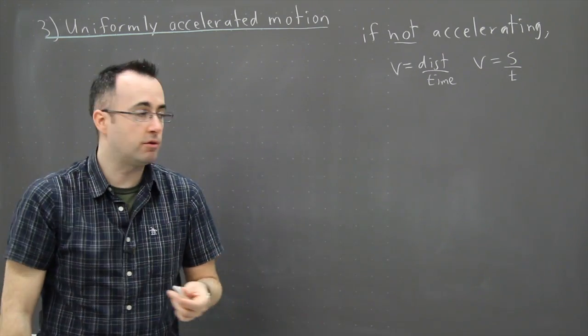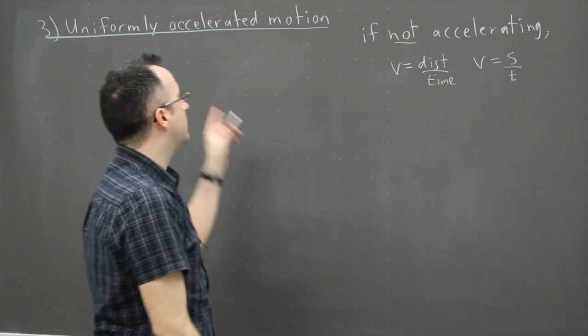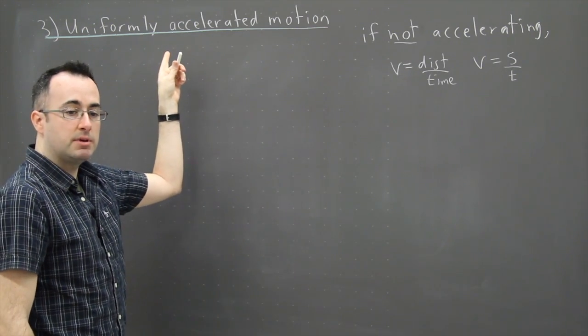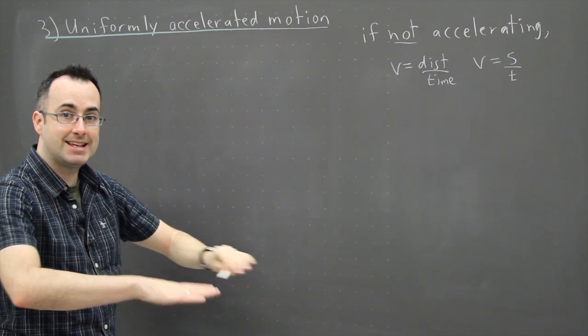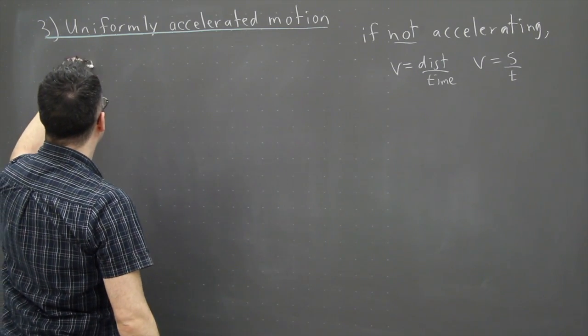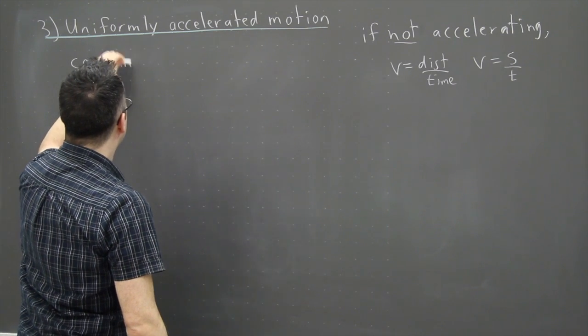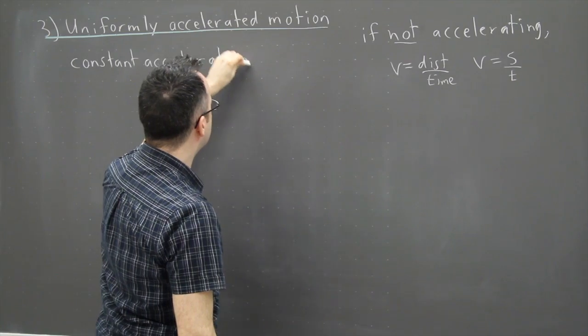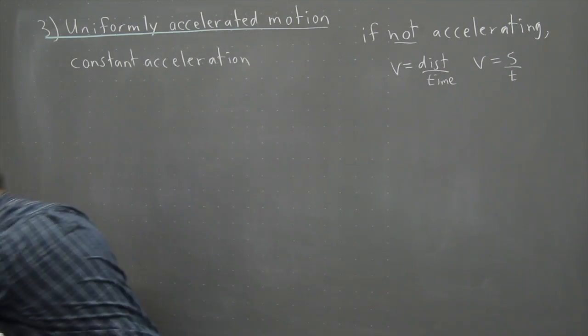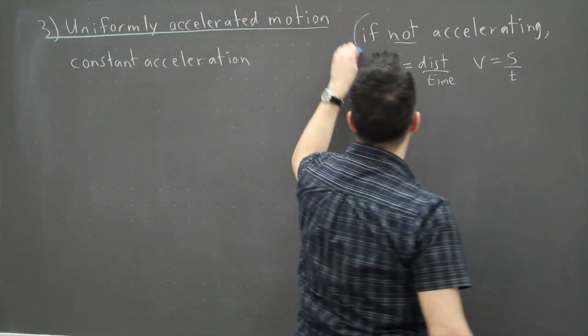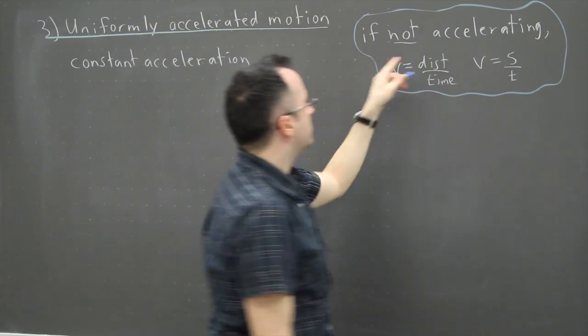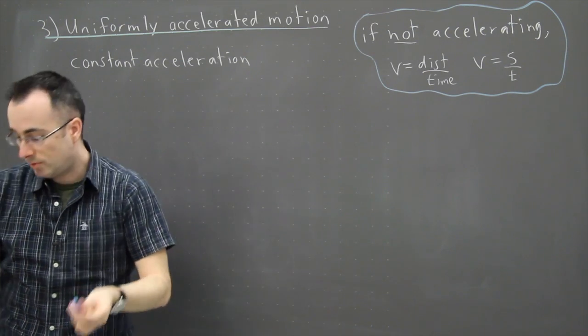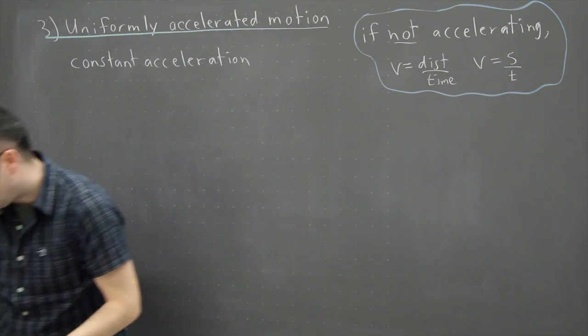So if we're actually looking for accelerated motion, what we do is we say it's uniformly accelerated because we're assuming that the acceleration is the same. We're assuming a constant acceleration. So we're assuming that we have some sort of acceleration value that's actually constant. What I'm going to do is just put this off to the side a little bit. If it's not accelerating, then you do that stuff. But if it is accelerating, then we have some equations of motion that we can actually use.